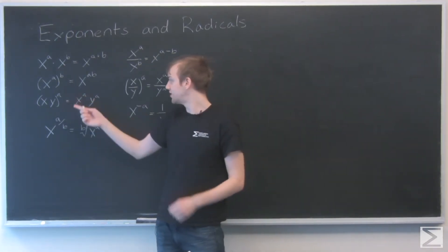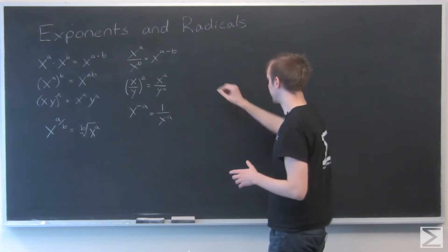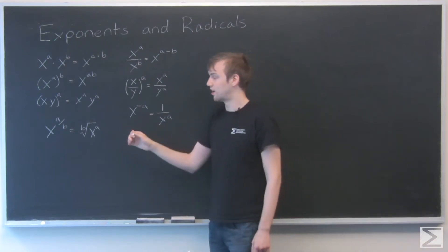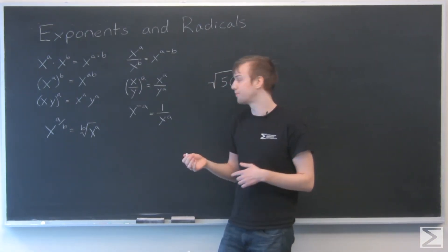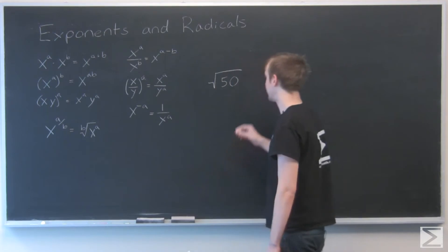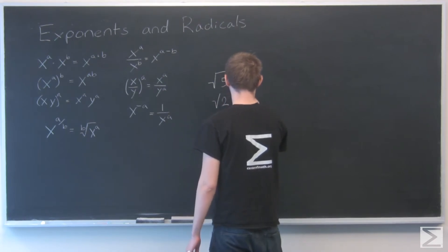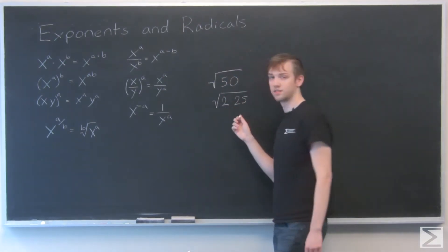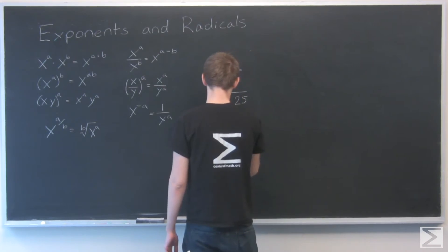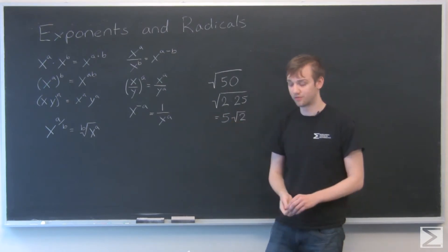Next: xy to the a equals x to the a times y to the a. This is another good rule for simplifying, especially when you have something inside a square root. For example, the square root of 50 — remember the square root is the same as raising to the power of one half. So 50 to the one half: break 50 into 2 times 25, and that's the square root of 2 times the square root of 25, which is 5. That's a really useful simplification tool.